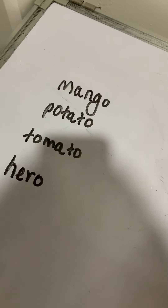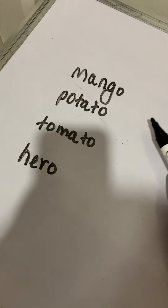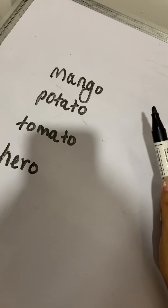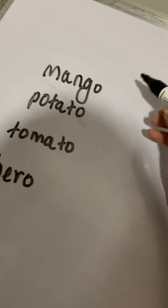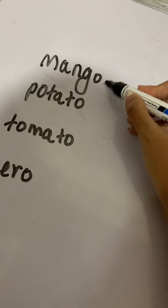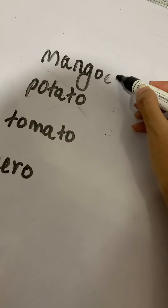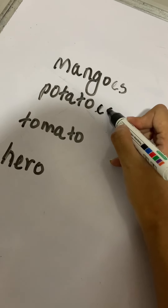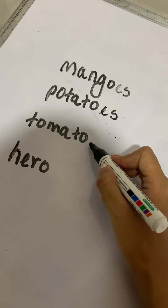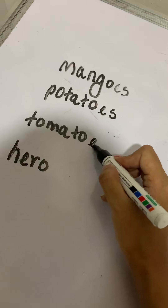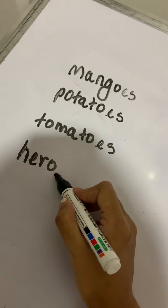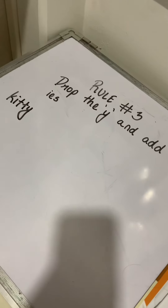A few words ending with O will also have ES in the plural. So mango will become mangoes, potato will become potatoes, tomato will become tomatoes, and hero will become heroes.